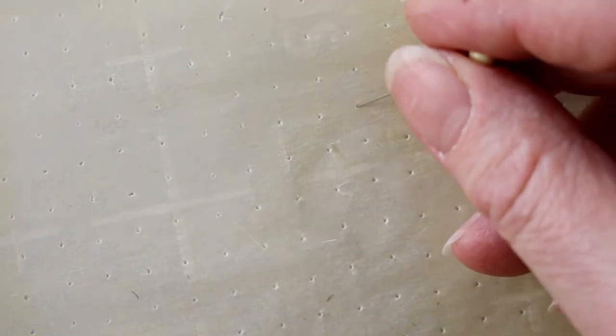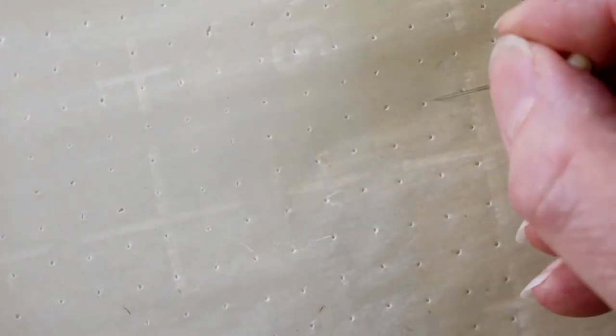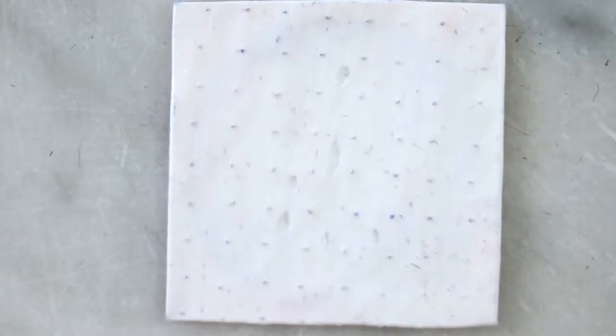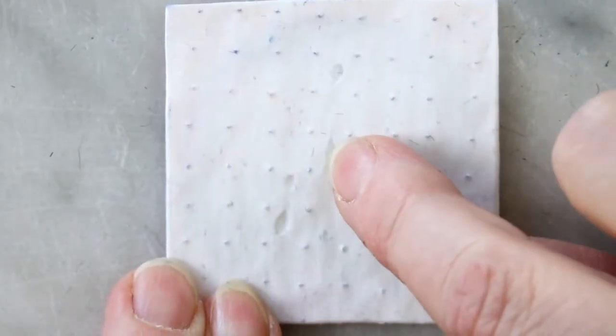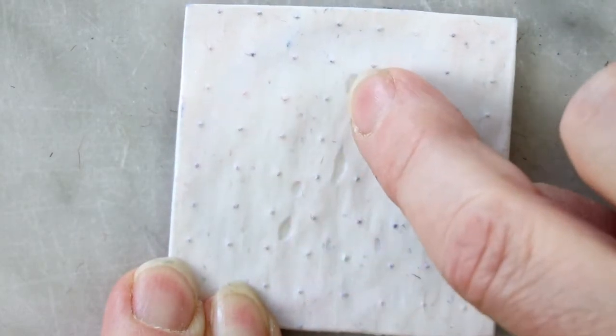First I tried to poke holes in my parchment with a pin. And even though every tiny pinhole showed in the back surface it still had bubbles. Okay, not enough ventilation yet.